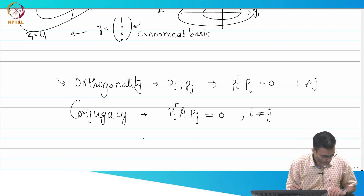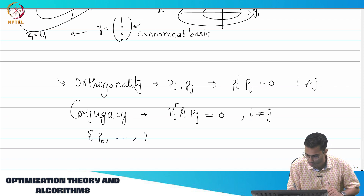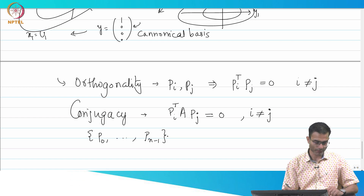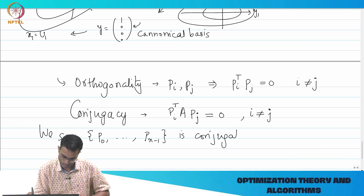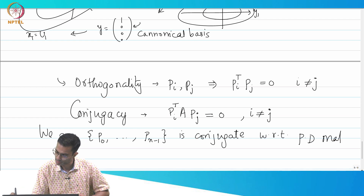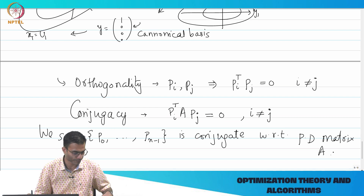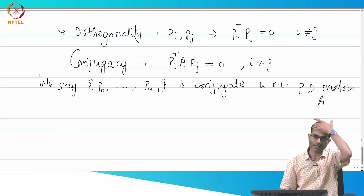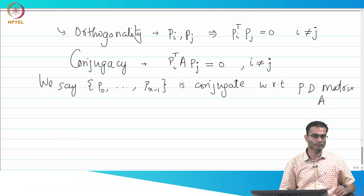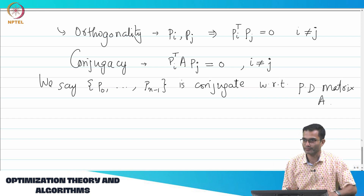So if I take all of these P's starting from P0 up to Pn-1, I have n vectors. We say that this set is conjugate with respect to a positive definite matrix A — that is just a definition. We are not saying anything about the case when i equals j; all we need is that it should be conjugate with respect to A.